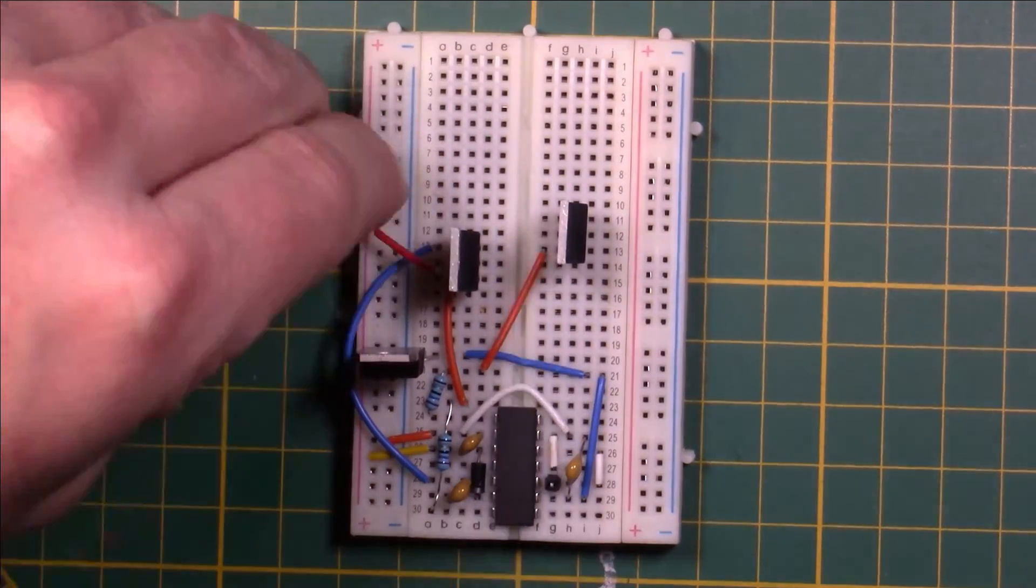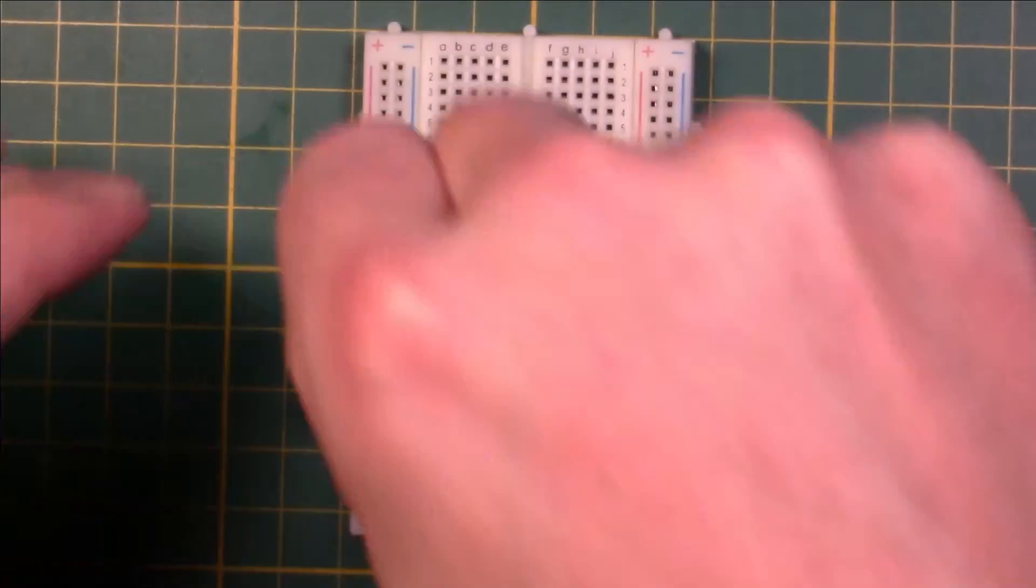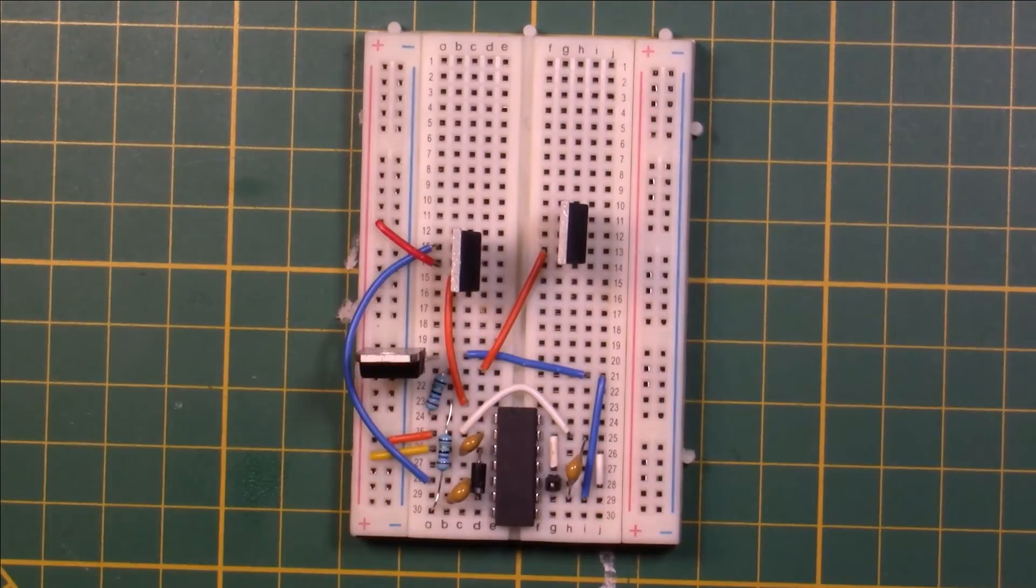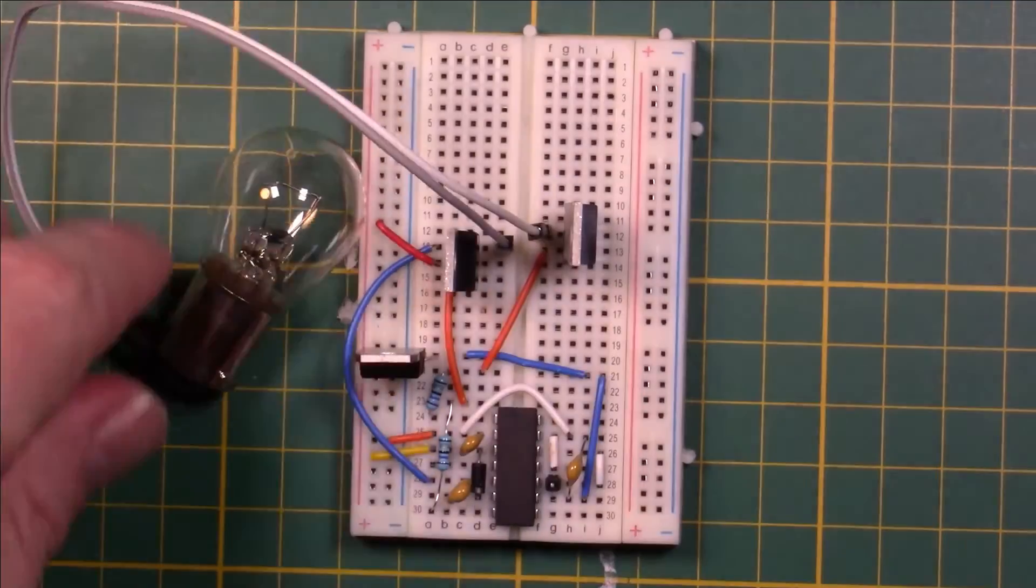Final part of the circuit is the power supply for the load. From the supply, through the top MOSFET, through the lamp, bottom MOSFET and back to the groundrail.